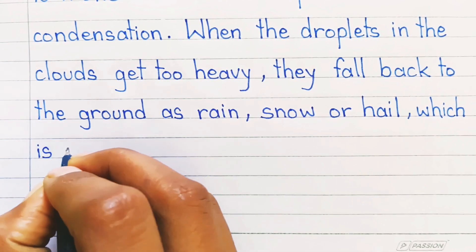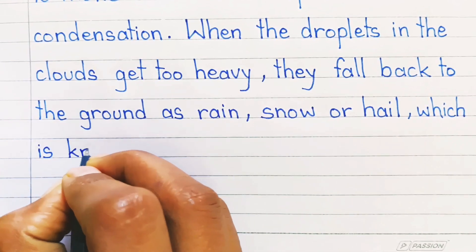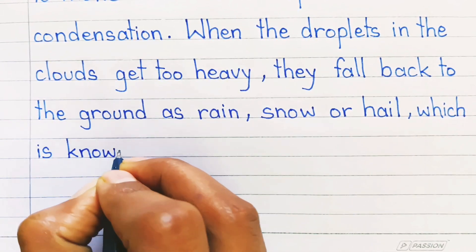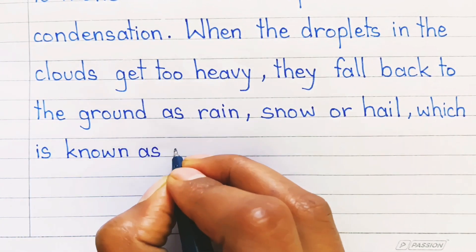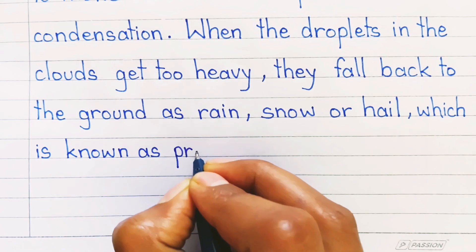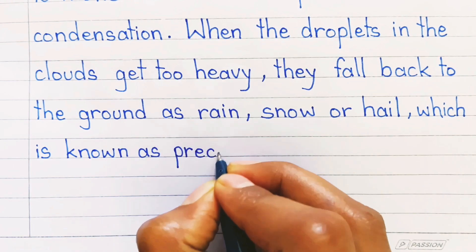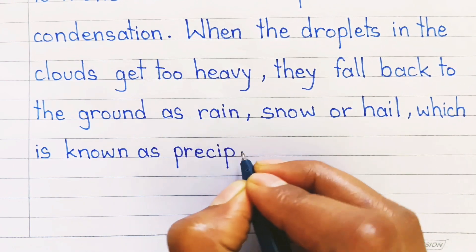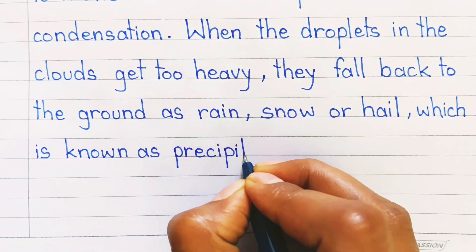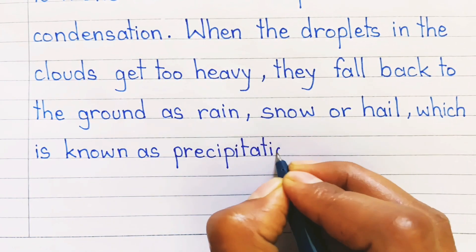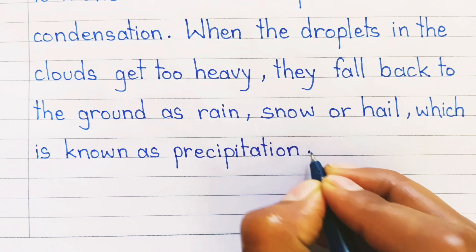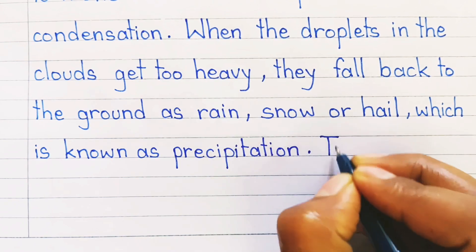When the droplets in the clouds get too heavy, they fall back to the ground as rain, snow, or hail, which is known as precipitation.